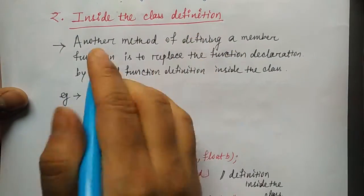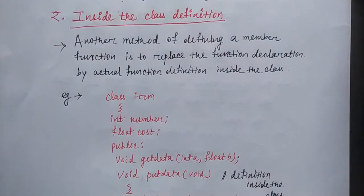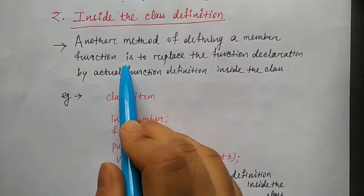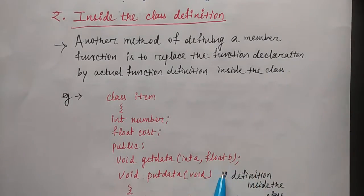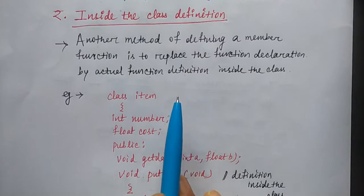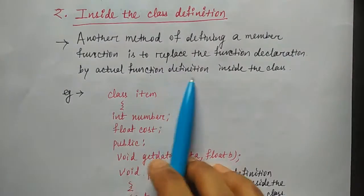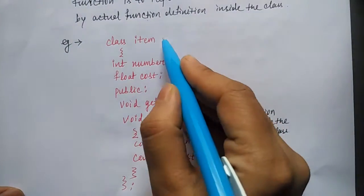What is inside the class definition? Directly where you declare the function, you define it with the function body — that is the class definition inside the class. Another method for defining a member function is to replace the function declaration with the actual function definition inside the class itself.